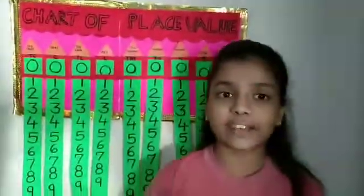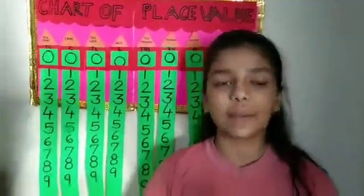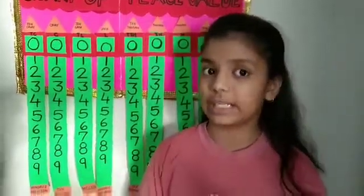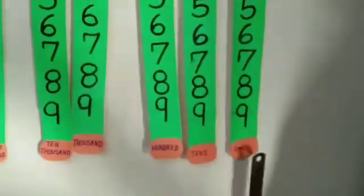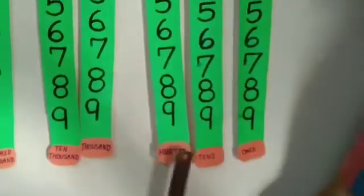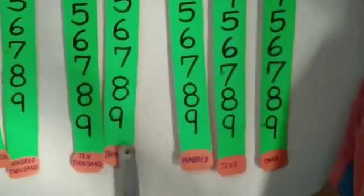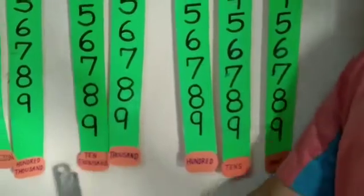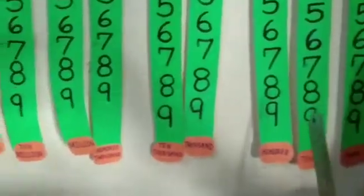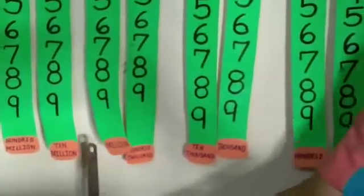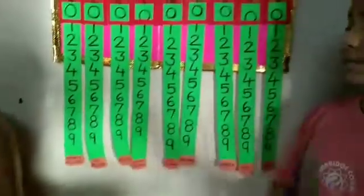While in the international number system we have three types of period. Those are ones period containing ones, tens and hundreds. Thousands period containing thousand, ten thousand and hundred thousand. Millions period containing millions, ten millions and hundred millions.